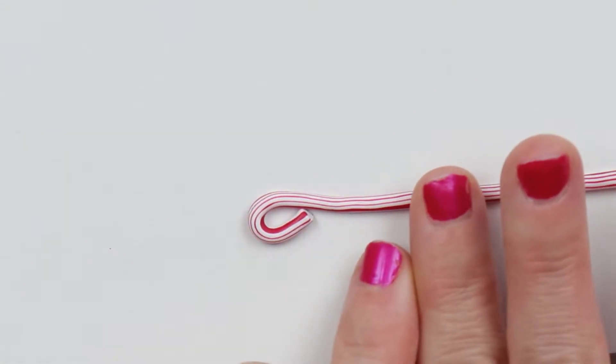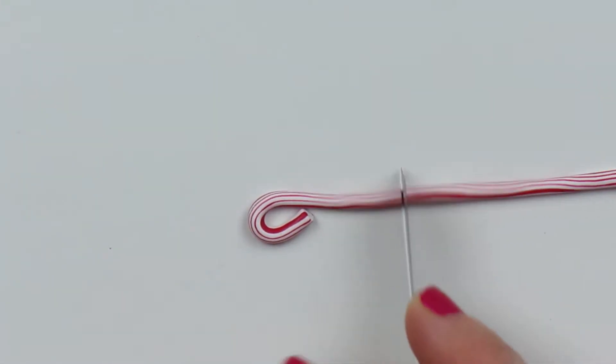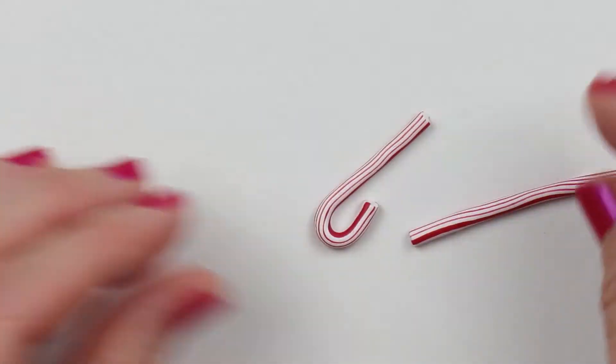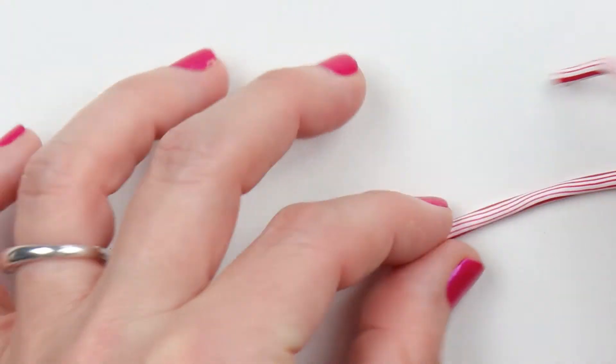And you can always cut off more if you've made your candy cane too long. And then go ahead and cut a second one for a pair of earrings.